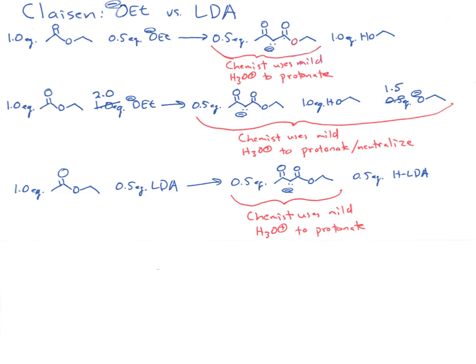LDA is a different story. If we add half an equivalent of LDA, we'll immediately convert half an equivalent of the starting ester to the enolate, which will attack the remaining half equivalent of ester to make the enolate anion of the beta-ketoester. We'll have half an equivalent left over of protonated LDA. The chemist would use mild acid to protonate and make the beta-ketoester product.